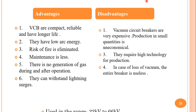The disadvantages of vacuum circuit breakers are that they are very expensive and production in small quantities is uneconomical. They require high technology for production, and in case of loss of vacuum, the entire breaker becomes useless. Vacuum circuit breakers are usually used in the range of 22 kV to 66 kV.